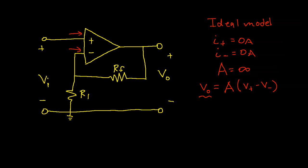And this is going to be some finite number. Since this is essentially infinite, in real life it's very big, but it's not infinite, but we think about it as being very large, then in order for V0 to be some reasonable number, the difference between these two input terminal voltages has to be very small.